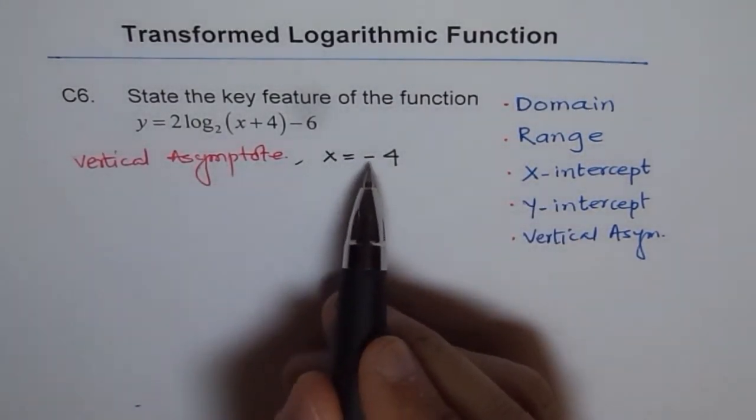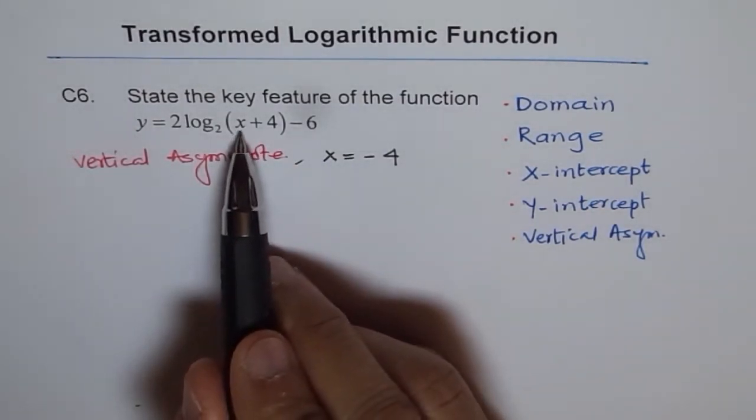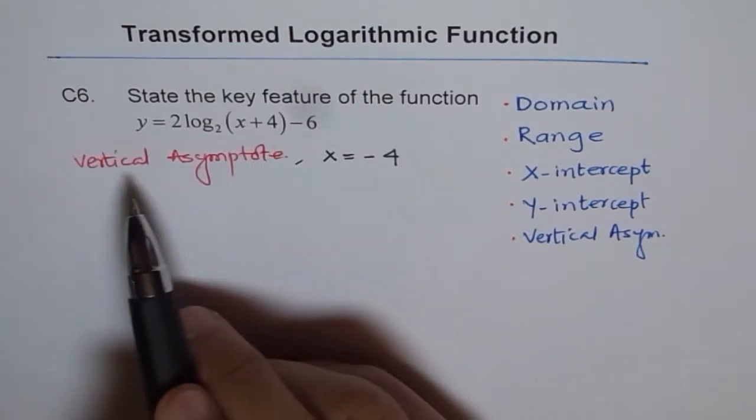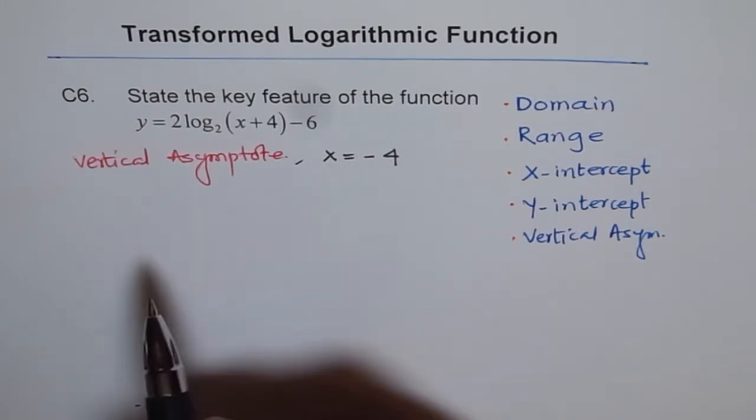Therefore, the vertical asymptote is at x equals minus 4. So x equals minus 4 is the vertical asymptote. If you plug in minus 4 here, you get log 2 of 0, that is not defined. Log should always be positive. So that gives you the domain.